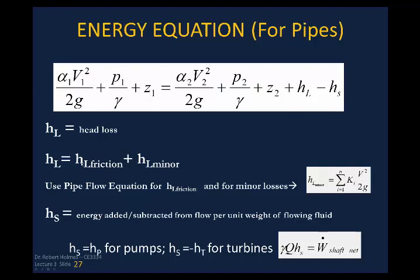H sub L is a combination of the friction head loss and the minor losses. For minor losses, you sum up the K coefficients for each type of loss — a bend has a K value, a valve of a certain type has a K value — and multiply the sum by the velocity head to get the minor head loss. Add that onto the friction head loss to get the total head loss.